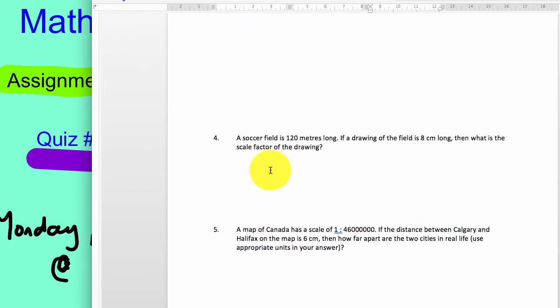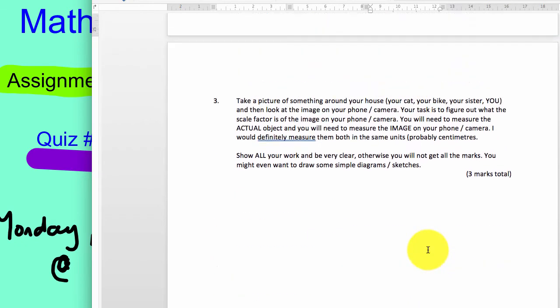Three, I'll come back to. Number four, you've got to find the scale factor if I give you the actual distance and the drawing distance. And then number five, you have to find how far apart two cities are if I give you the scale factor and how far apart they are in a map. Alright, back to number three.